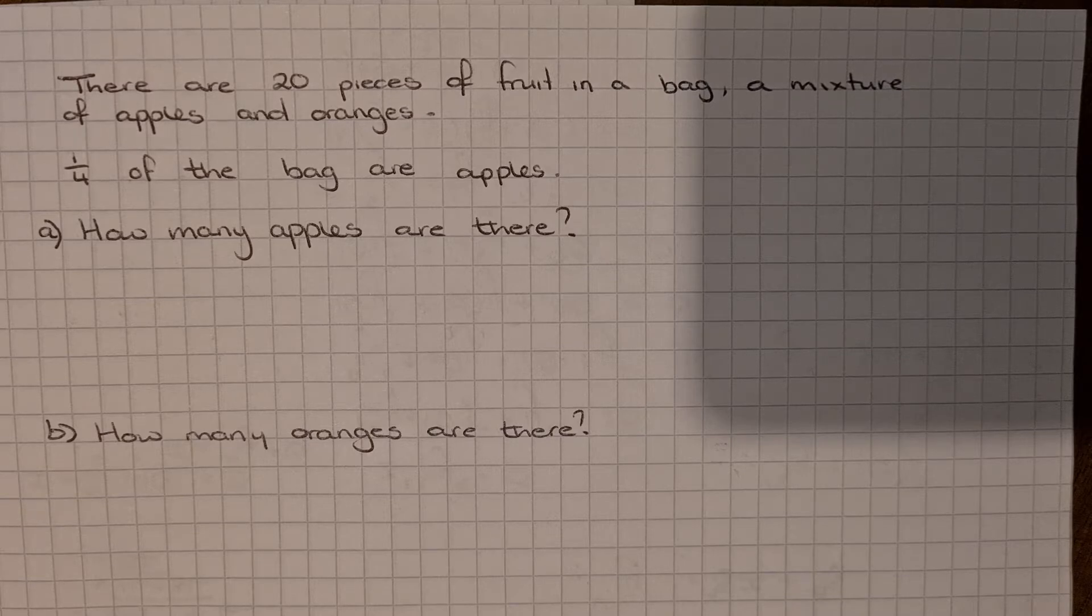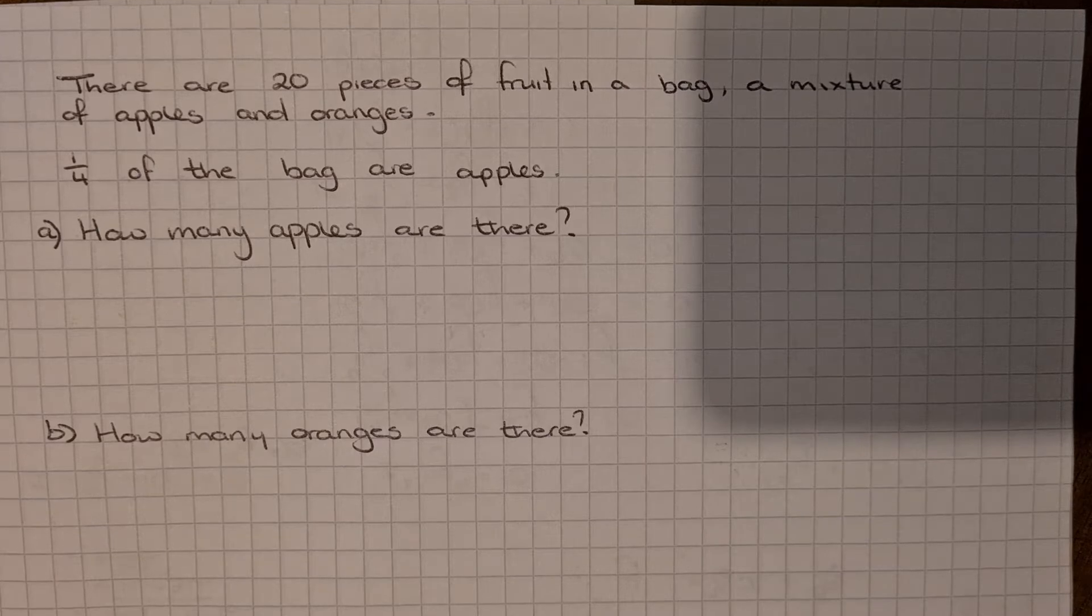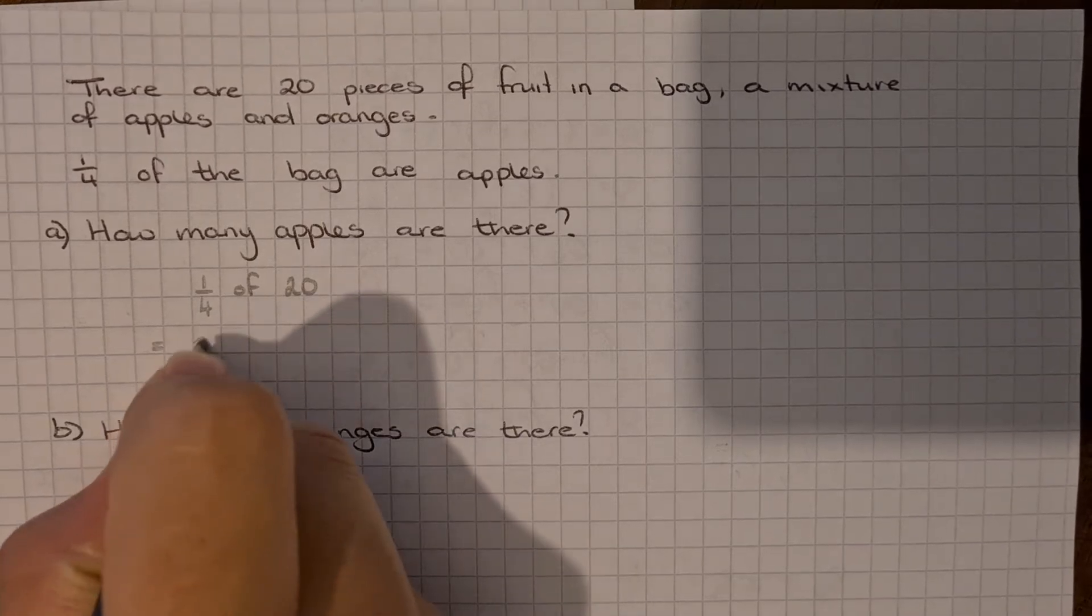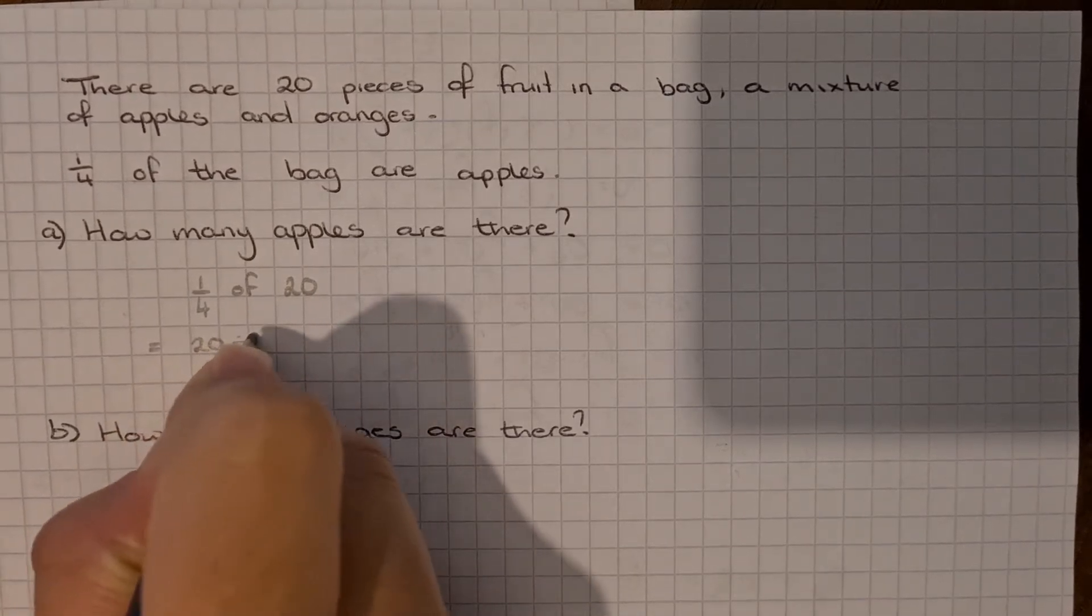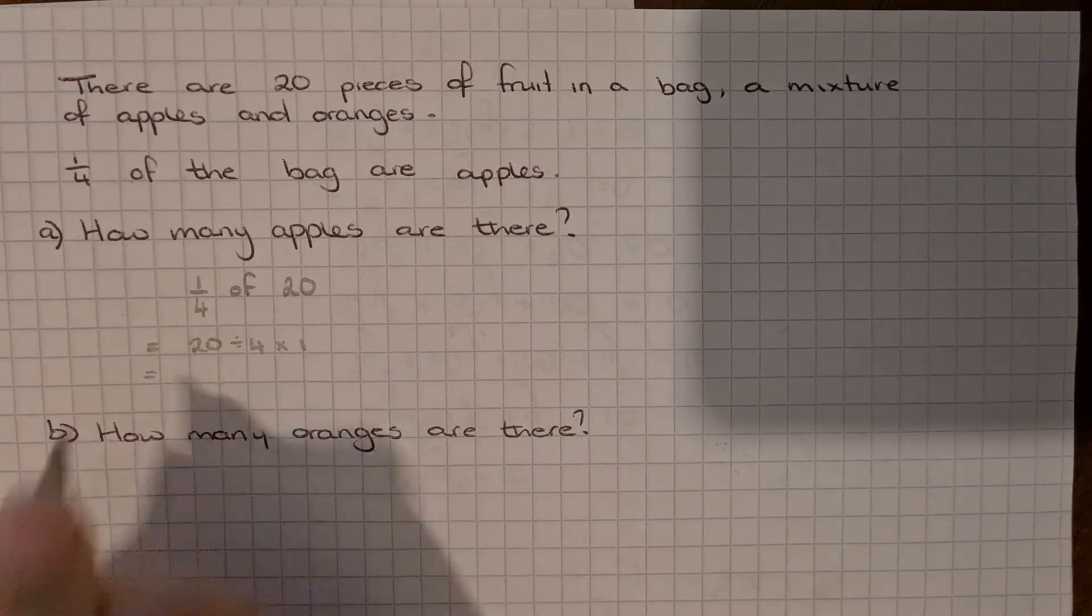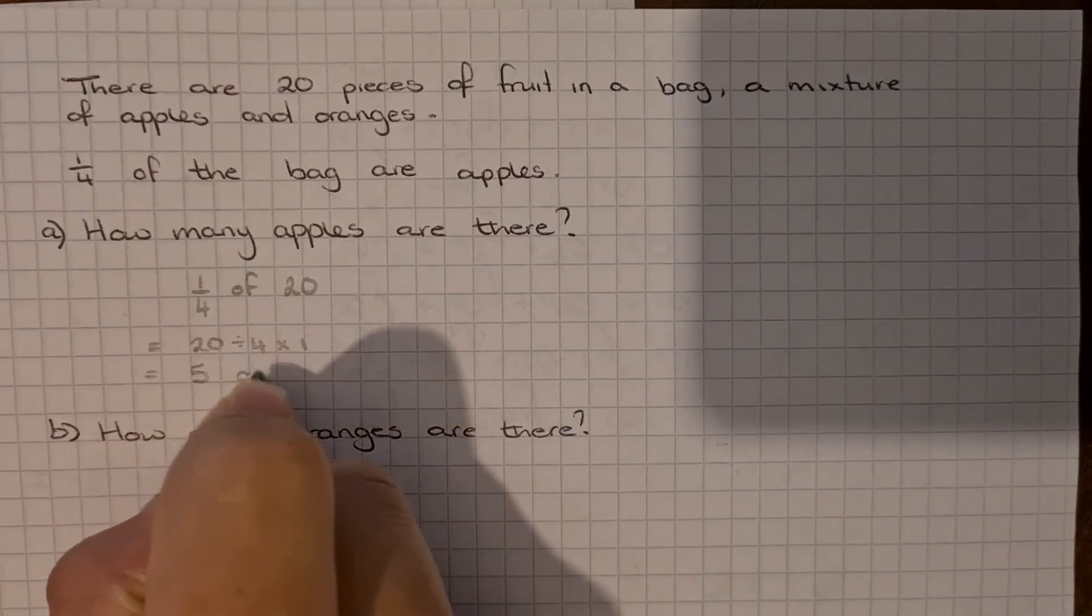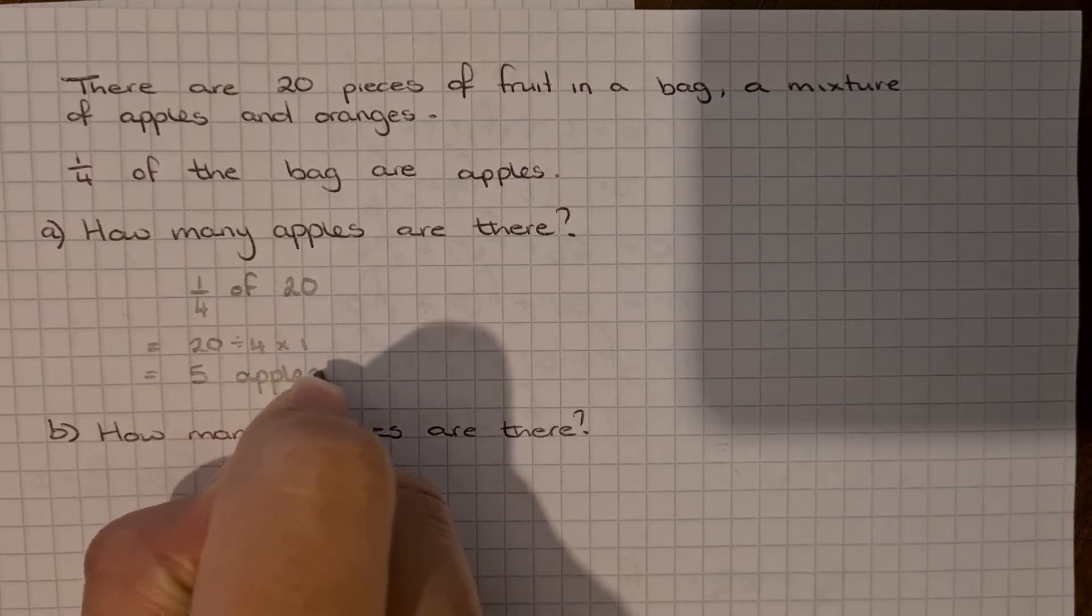From the question we know that a quarter of the pieces of fruit in the bag are apples and there are 20 pieces of fruit in total. So we just need to work out a quarter of 20 using the rule of divide by the bottom and times by the top. So we're going to do 20 divided by 4 times by 1 and the answer is 5. So there are 5 apples in the bag.